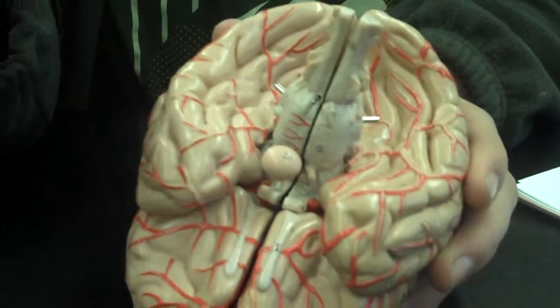First thing is the pituitary gland. The pituitary gland we looked at in the brain. It's just a small gland located right here below the cerebrum.